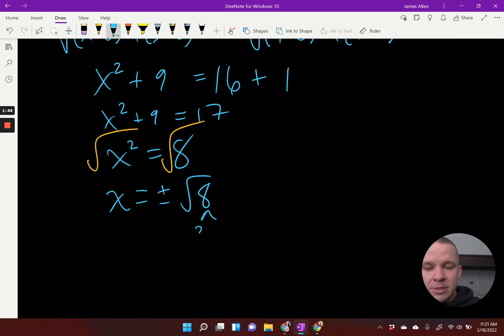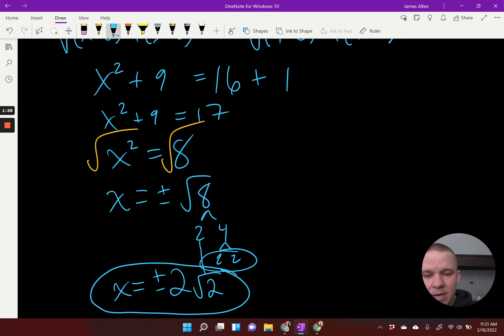So I'm going to have to break down 8 to 2 and 4, 2 and 2. A lot of people do this differently, but I'm going to circle my pairs of 2s. And I'm going to have x equals plus or minus that pair of 2s comes out as a 2. And then I'm left with 2 inside the radical.